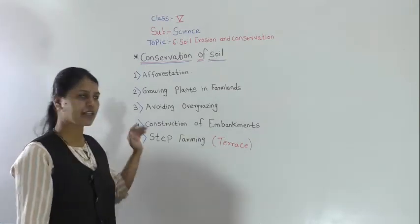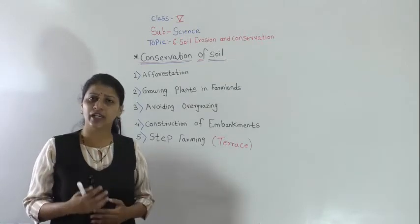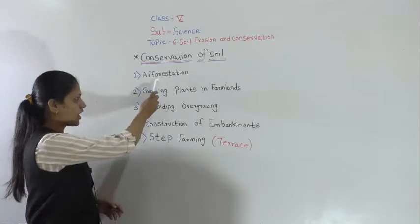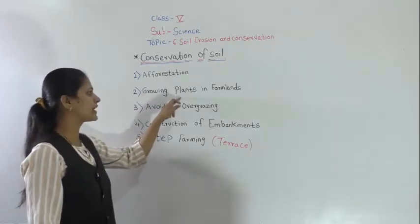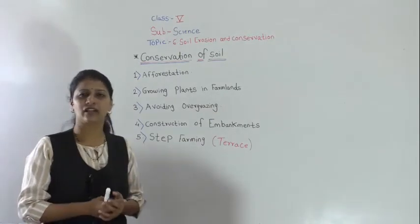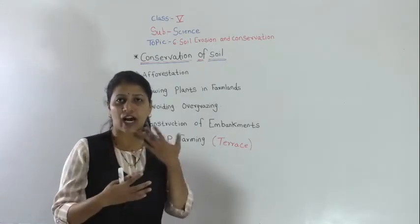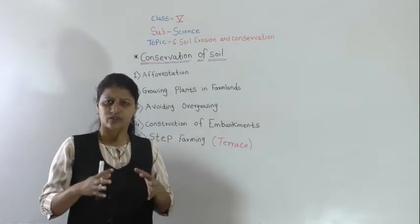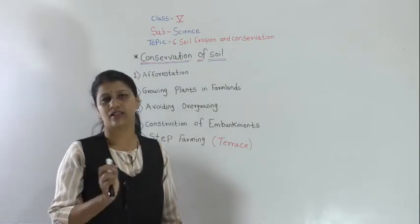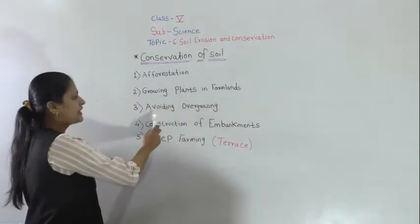Let's recap the steps to conserve the soil. The first is afforestation — growing plants on a large scale. The second is growing plants in farmland — where the land is bare, we must grow plants or at least grass.